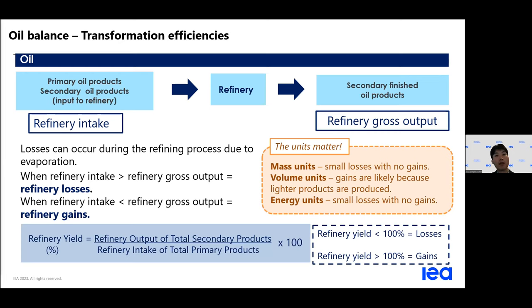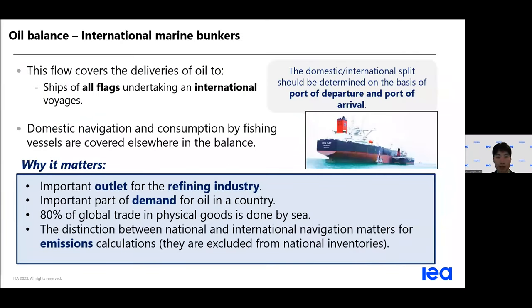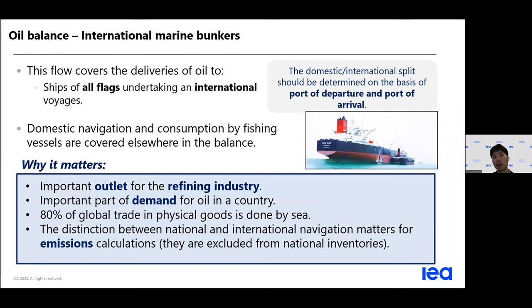Here I put the formula to calculate refinery yields. International marine bunkers account for a large portion of oil consumption. As the name literally means, it shows the oil consumption destined for international travel or voyages. It matters because it is a very important outlet for the refining industry, and 80% of global trade in physical goods is done by sea, so it consumes a large portion of oil demand. The distinction between national and international navigation is very important because it impacts the calculation of emission inventories.